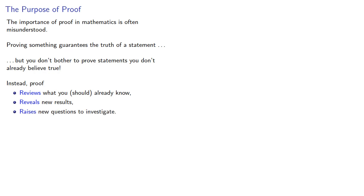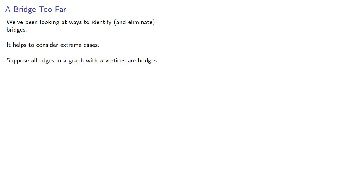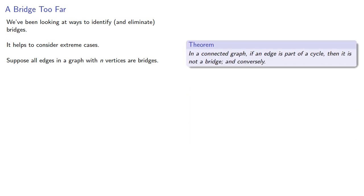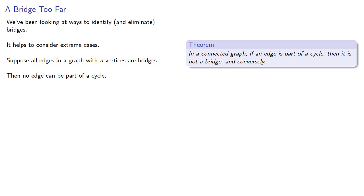Let's see how that works. We've been looking at ways to identify and eliminate bridges, so it helps to consider extreme cases. Suppose all edges in a graph with n vertices are bridges. One of the things we know is that in a connected graph, if an edge is part of a cycle, then it is not a bridge, and conversely. So if everything is a bridge, then no edge can be part of a cycle.